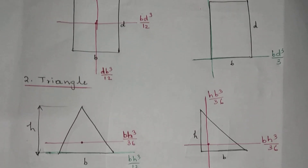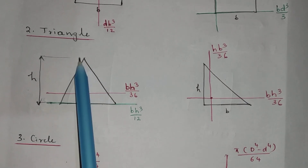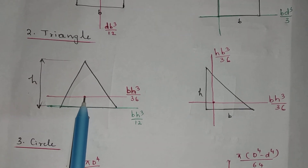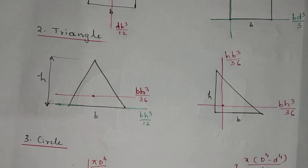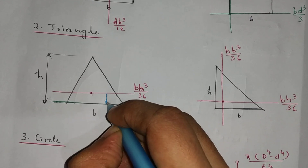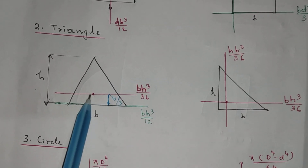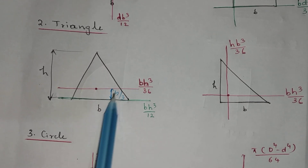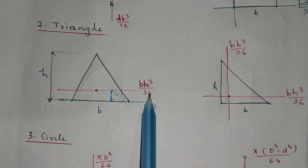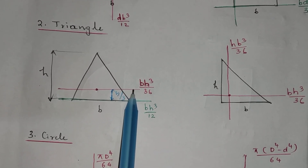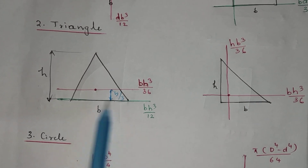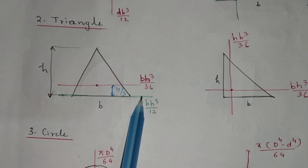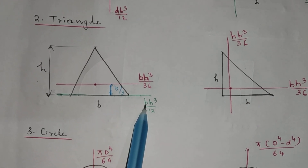The next figure is a triangle. The base is B, the height is H, and this is the CG. The distance from the base side to the CG is H by 3. This is the centroidal axis parallel to side B. The moment of inertia value of this triangle about this centroidal axis is BH cube by 36. The axis passing through side B gives a moment of inertia value of BH cube by 12.